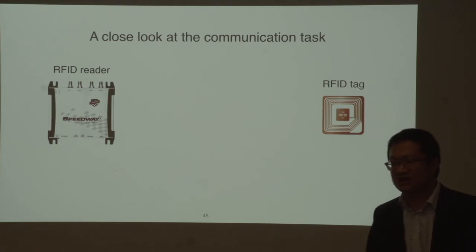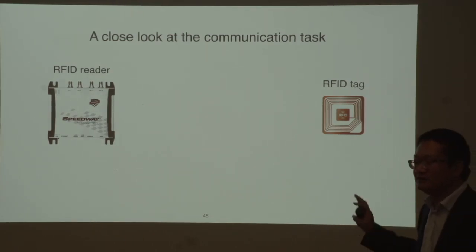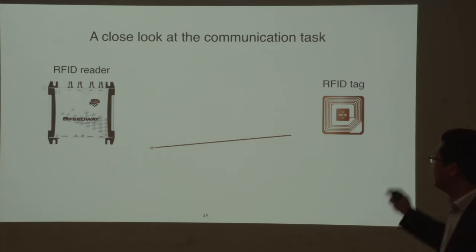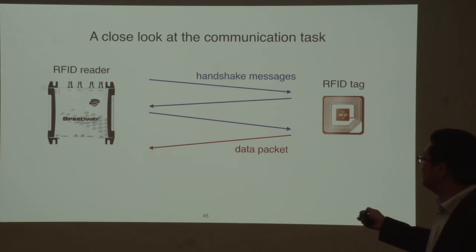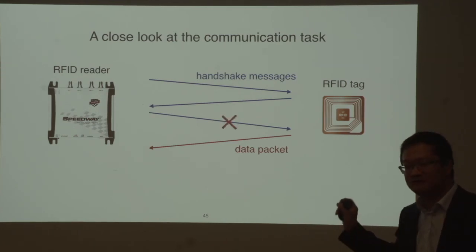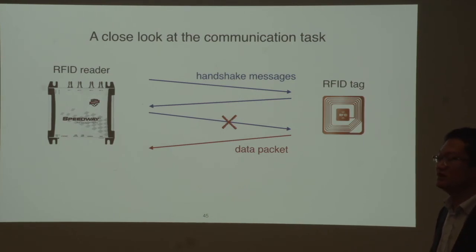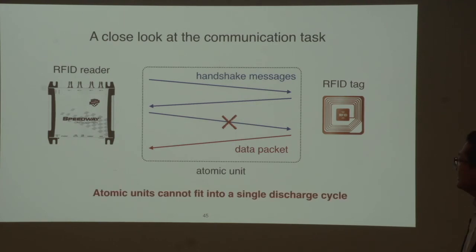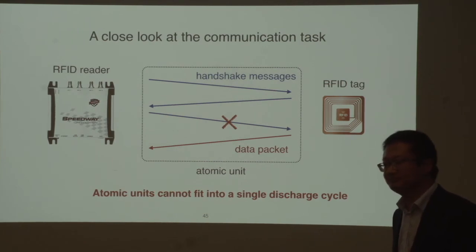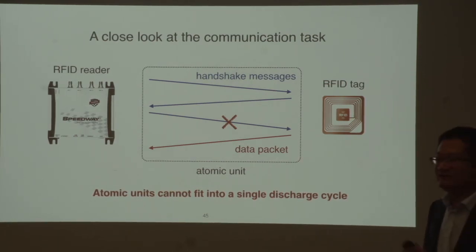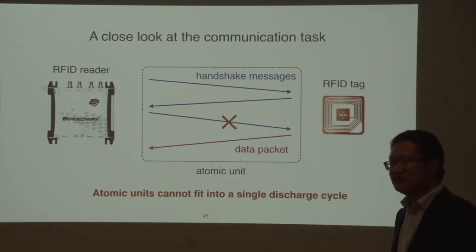Consider the RFID example: when an RFID tag communicates data packets to the RFID reader, it must send several handshake messages in addition to the data. If any message fails due to energy outage, the communication task fails. The reason is that in order to transmit the data message, it must first transmit the handshake messages — and the smallest task unit defined by the RFID system may be too large for the tiny energy buffer it has.